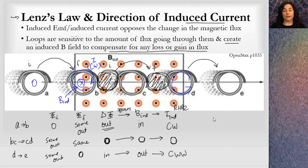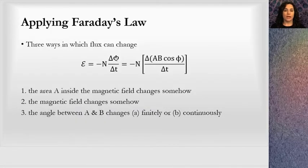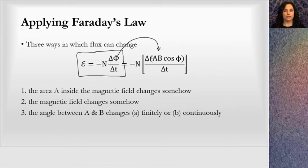Lenz's Law often takes a lot of practice — problems can trick students. Calculating induced EMF and induced currents is often not as difficult as finding the direction. Applying Lenz's Law usually takes more reasoning than applying Faraday's Law. Faraday's Law is the quantification: negative N times change in flux over time. I put in what flux is — flux is A times B times cosine phi — so there are three ways that flux can change because there are three variables.